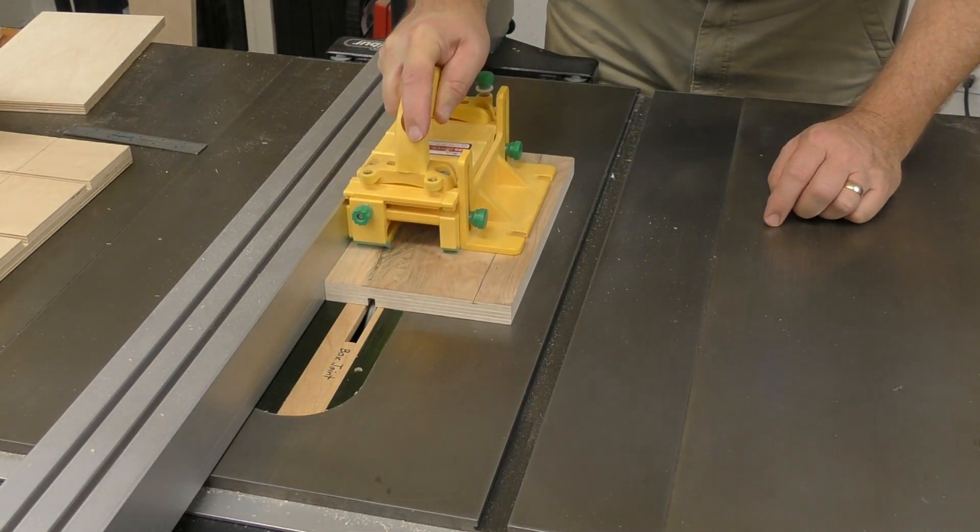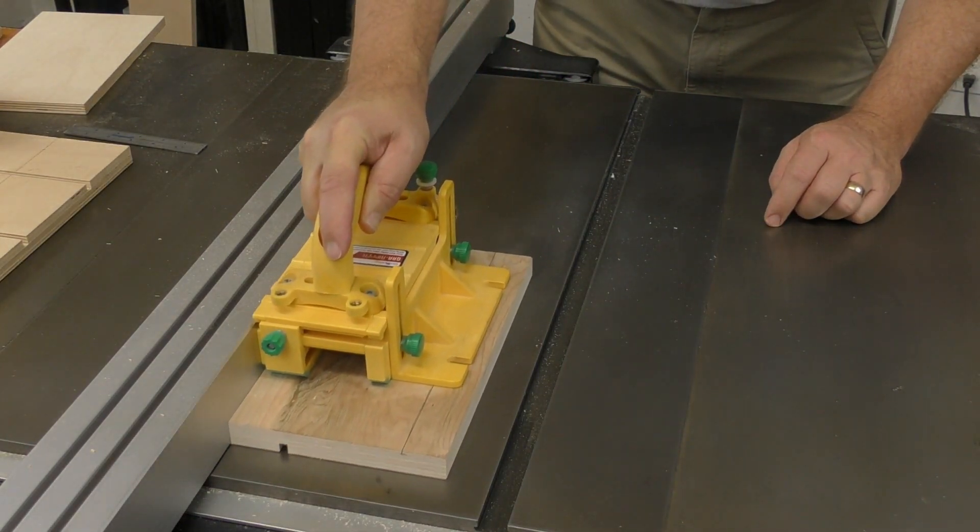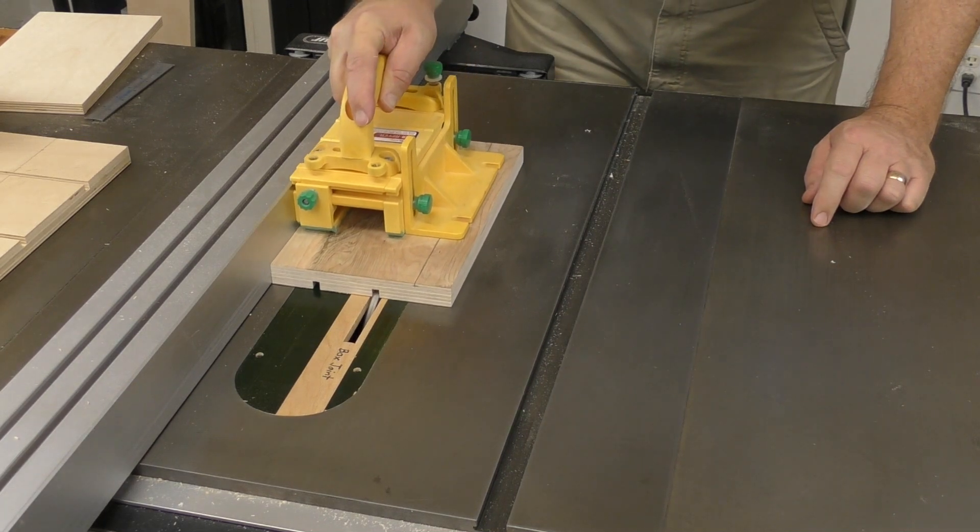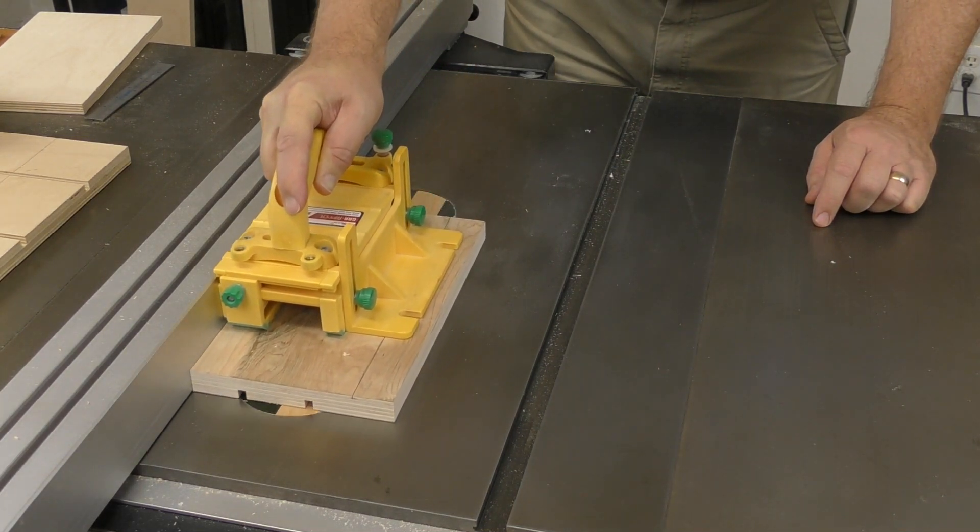The vertical face gets two grooves along the 10-inch length, one at an inch and a half from the edge, the other at three and a half.